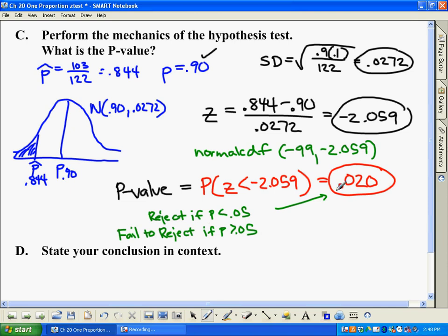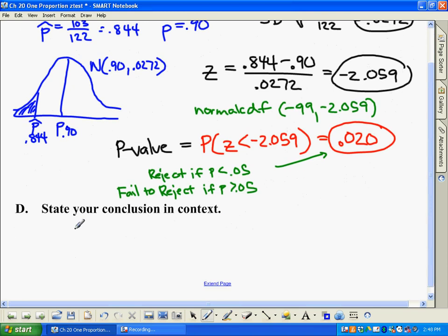So like I said, this is obviously less than 5%, so in our conclusion here, we reject H0. Since our p-value is less than 5%, and any time we reject our null hypothesis, it means we have strong evidence.